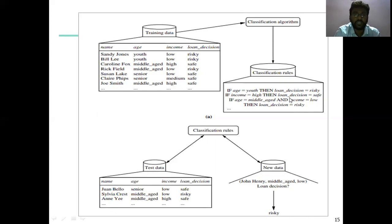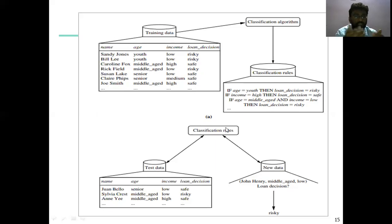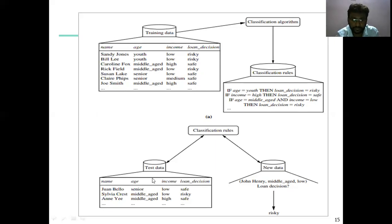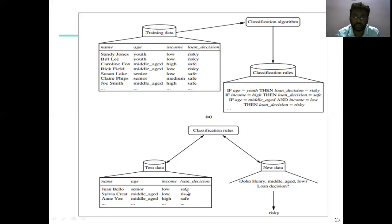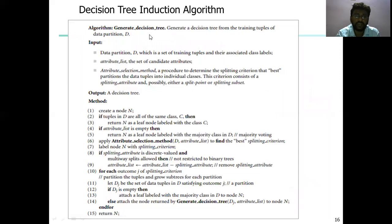Why is youth risky? Because youth may not be employed. If income is high, the customer can repay the loan back to the bank, so it is safe. If age is middle age but income is low, there is no income for that category, so it is a risky decision. These classification rules are applied to the training data, and after training and classification, the test data results come out with safe or risky values. The safe-zone data is moved into the next data set for further processing. This is the algorithm of the decision tree.